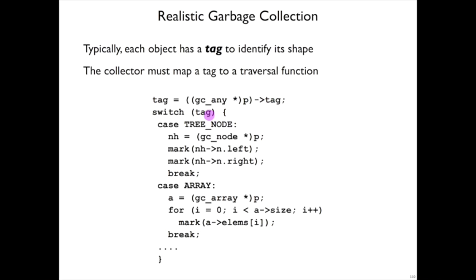And then the garbage collector can switch on the different kinds of tags. If that tag indicates it's a tree node, like in our simple example, then it can mark the left and right after casting that pointer into a GC node. But maybe the tag says it's an array of pointers, and a GC array starts with a size that tells us how many pointers to traverse. So the array code looks like this, where it has to do a for loop to mark all the elements.